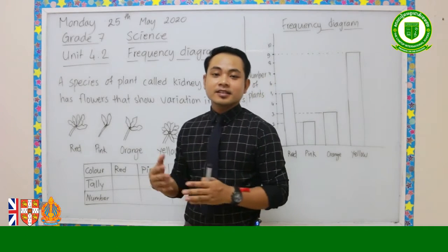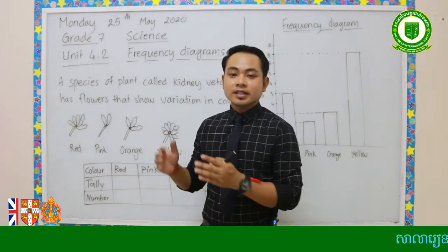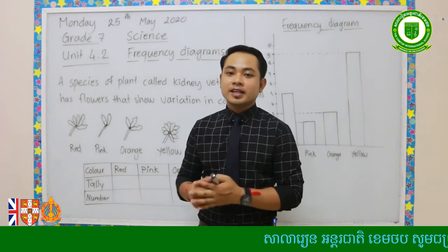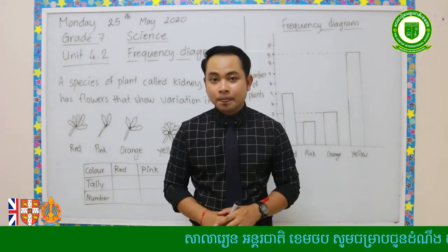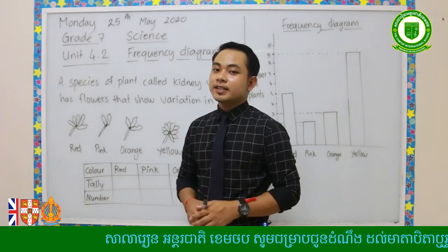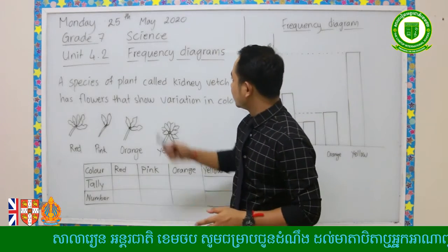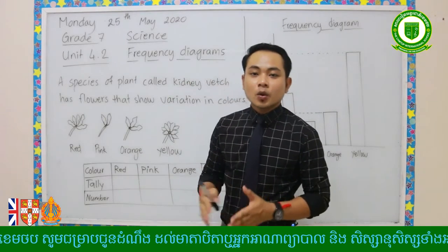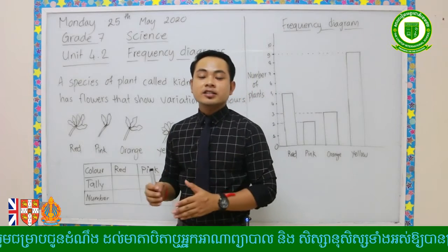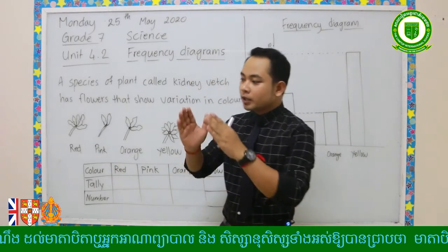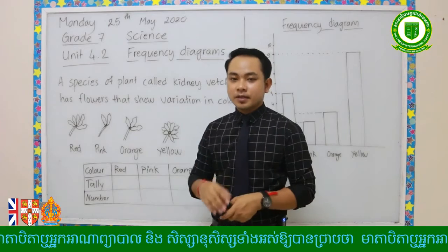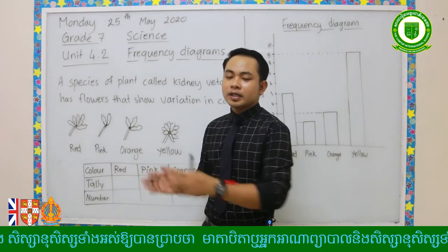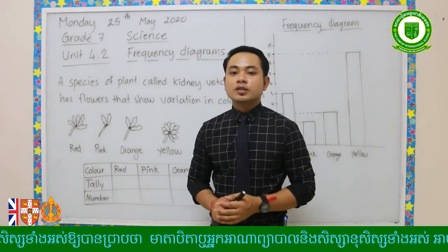Variation means the differences between the individual members in one type of a species, or you could say one type of a living thing. Today we still continue that lesson, but we will talk about frequency diagrams. We're going to use the diagram to show or display the variations in one species — one group or one type of a species that has different individual members but they are all in the same species or same family.